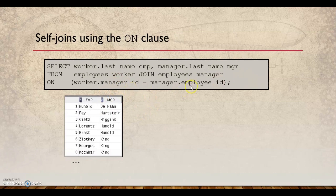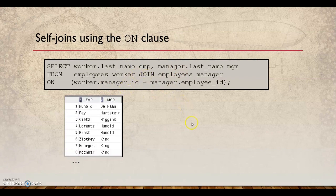In a self-join, you give the employee table two aliases — for example, 'worker' and 'manager'. You join on worker.manager_id = manager.employee_id. So manager.last_name gives the manager's name and worker.last_name gives the employee's name. Even though you have mentioned two different table references, it's actually the same table joined to itself — that's why it is called the self-join.